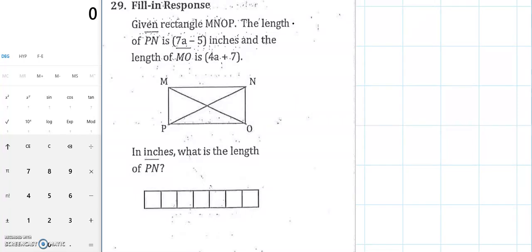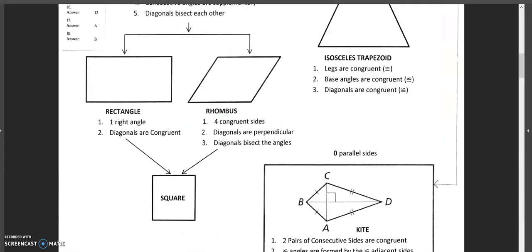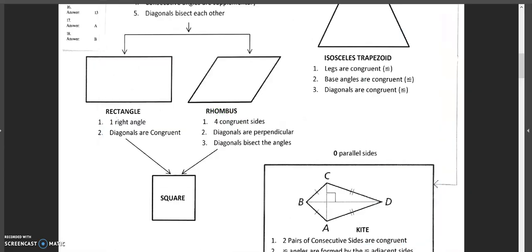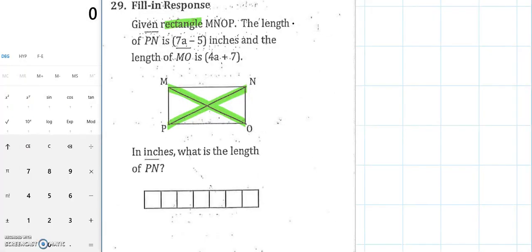Let's start off with number 29. You've read the question and we know now that this is a rectangle. When they tell us that the length of one diagonal, PN, is 7a minus 5, and the length of the other diagonal, MO, is 4a plus 7, we think about what's special about diagonals in a rectangle. If you remember from our list, the diagonals in a rectangle are congruent. So if they're congruent, we're going to set them equal to each other.